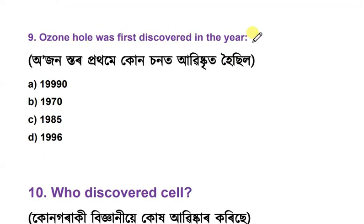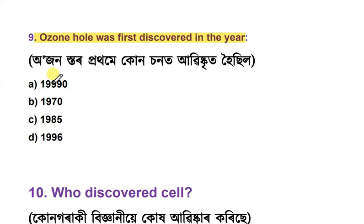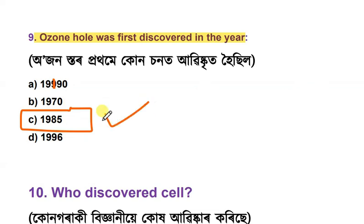Question number 9: When was the ozone hole first discovered? The options are 1990, 1970, 1985, and 1996. The answer is 1985 — the ozone hole was first discovered in 1985.